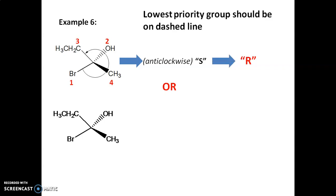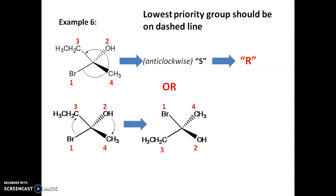An alternative method for the same problem is to exchange groups so the lowest priority ends up on the dashed line. After assigning priorities, we exchange methyl and OH, and simultaneously exchange bromine with CH2CH3. After rearranging, the methyl group is on the dashed line. Going from 1 to 2 to 3 is in the clockwise direction, confirming the answer is R.